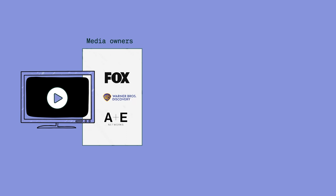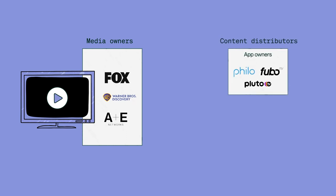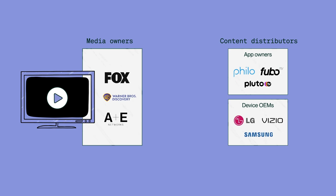In streaming TV, media owners who produce and own content typically enter into agreements with content distributors such as fast app owners and device manufacturers to get their content in front of more viewers. These carriage agreements not only stipulate the rights for the content and distribution, but also specific rights for advertising and inventory splits. This means that multiple parties could have authorized rights to sell a certain percentage of the inventory for the same channel or program. Often, these agreements are negotiated so that the rights to sell inventory within the channel are split between two parties.